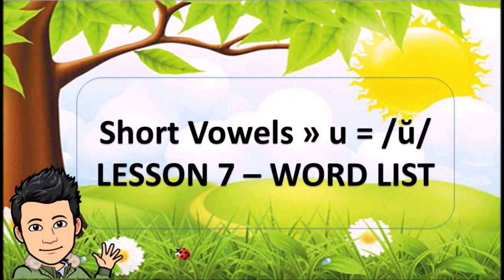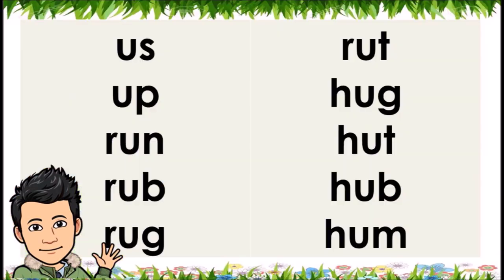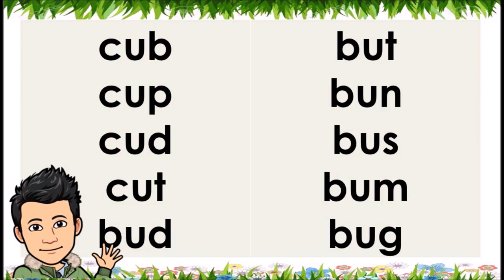Short vowels: U equals U. Lesson 7. Word list: Us, up, run, rub, rug, rut, hug, hut, hub, hum, cub, cup, cut.